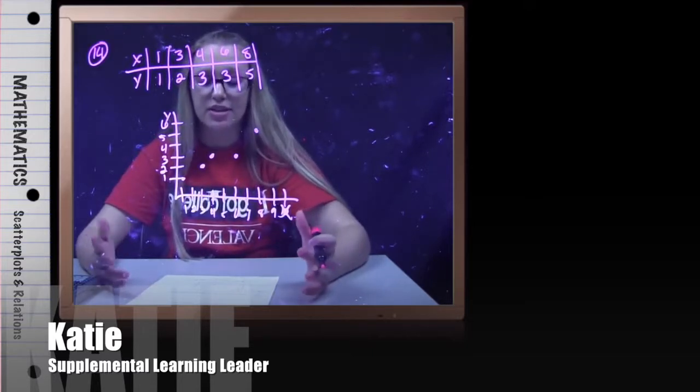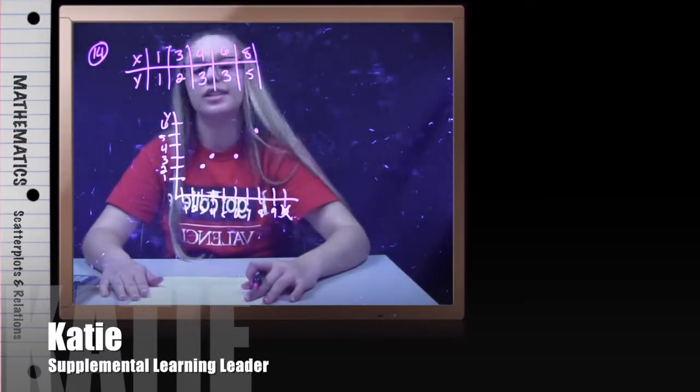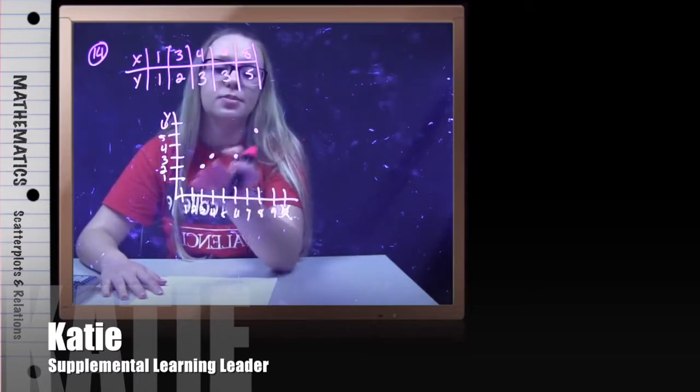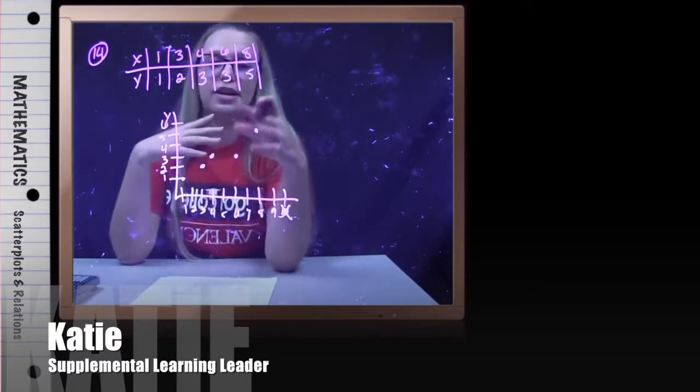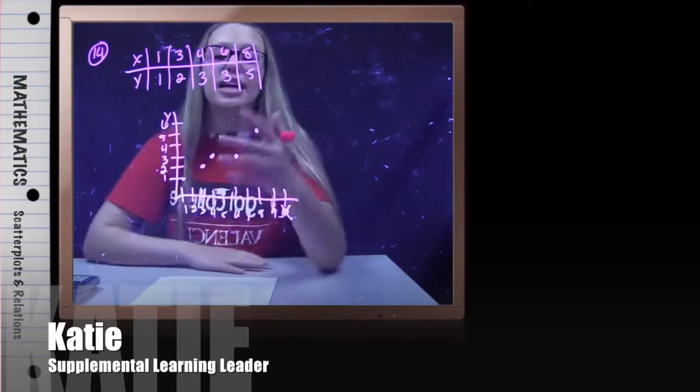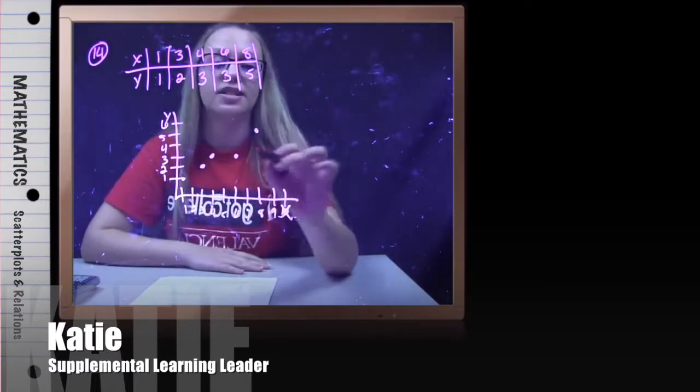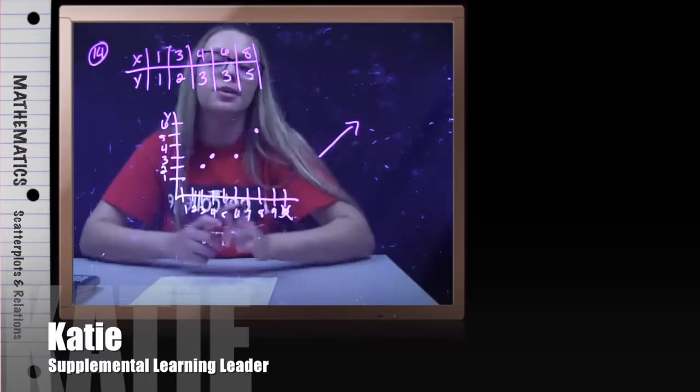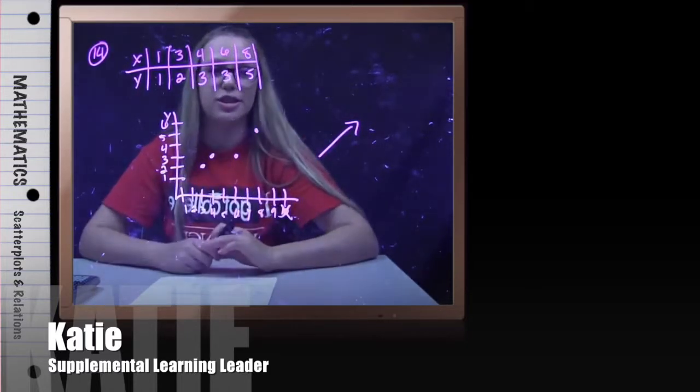We're also asked to describe whether or not the variables appear to be related. So we're looking to see, do our dots appear to be in a line? Do they seem like they're going in the same direction? In this case, they all seem to be positive, which means they're going up, and they're pretty close to each other. So we're going to say yes, our data appears to have a strong relationship.